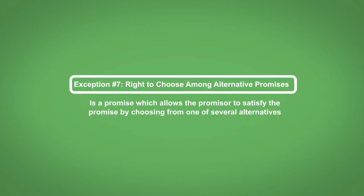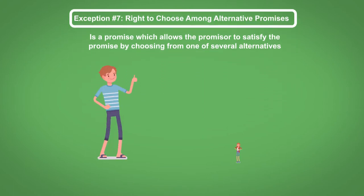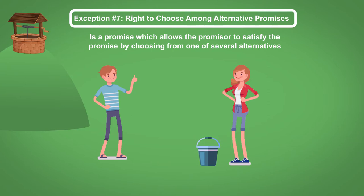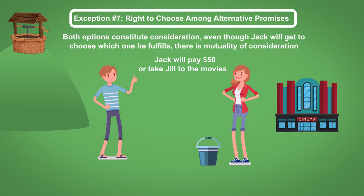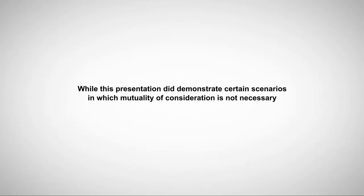Exception number seven: right to choose among alternative promises. This is a promise which allows the promiser to satisfy the promise by choosing from one of several alternatives. For example, Jack promises Jill that if Jill fetches him water, Jack will either pay Jill fifty dollars or take Jill to a movie, at Jack's option. Because both options constitute consideration, even though Jack will get to choose which one he fulfills, there is mutuality of consideration and the contract is enforceable.